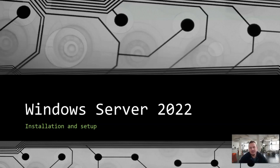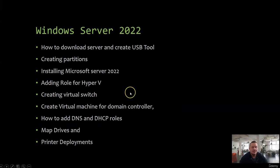For that, we are going to do an installation from the beginning. We are going to download an ISO image, go through the installation process, and then set up roles. We'll cover creating a USB tool, partitions, installing Microsoft Server 2022, adding the Hyper-V role, creating virtual switches, virtual machines, a domain controller, DNS, DHCP roles, mapping drives, and deploying printers.